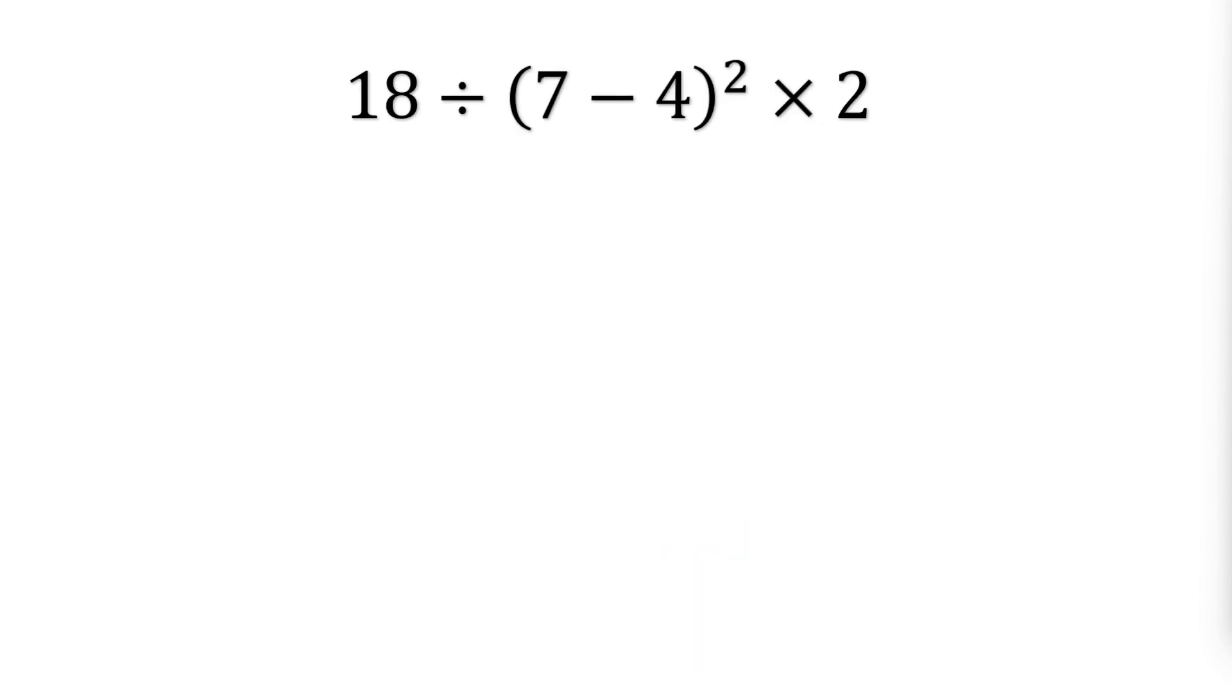Here we deal with anything inside parentheses. We have 7 minus 4 inside the parentheses, which equals 3. Bring everything else down. Now we handle the exponent. 3 squared means 3 times 3, which equals 9. Bring everything else down.